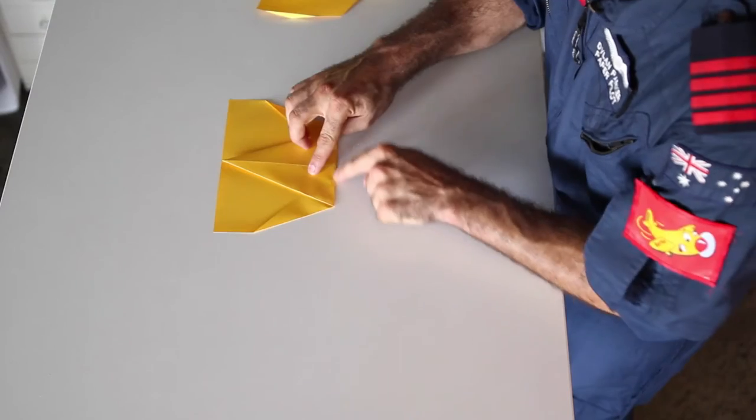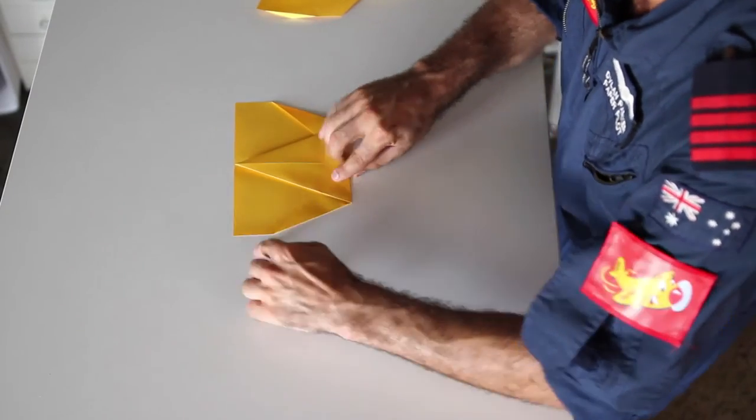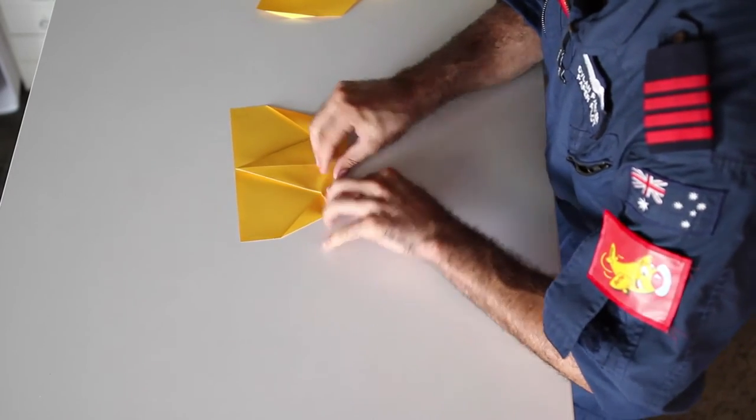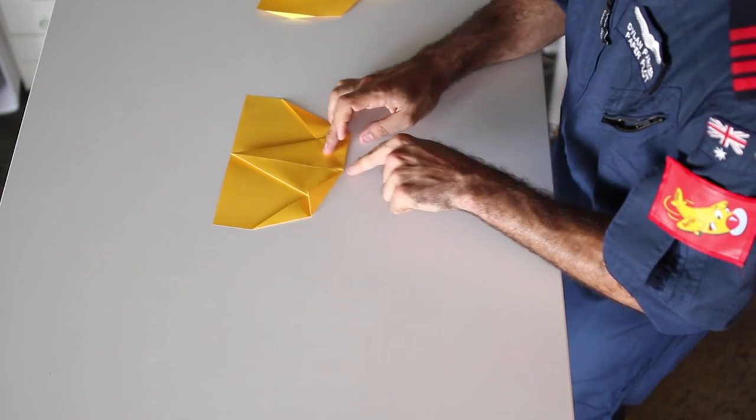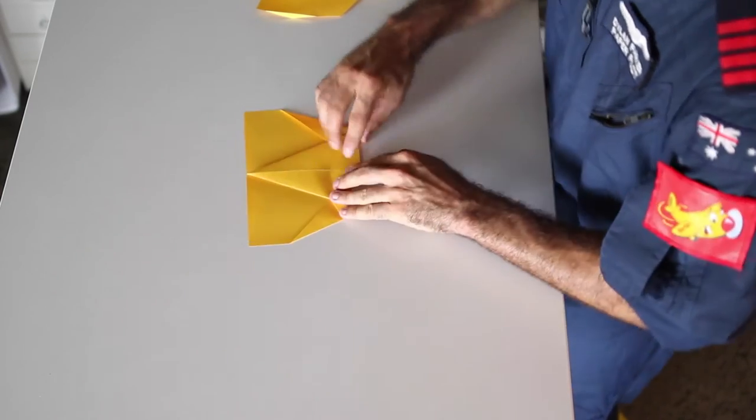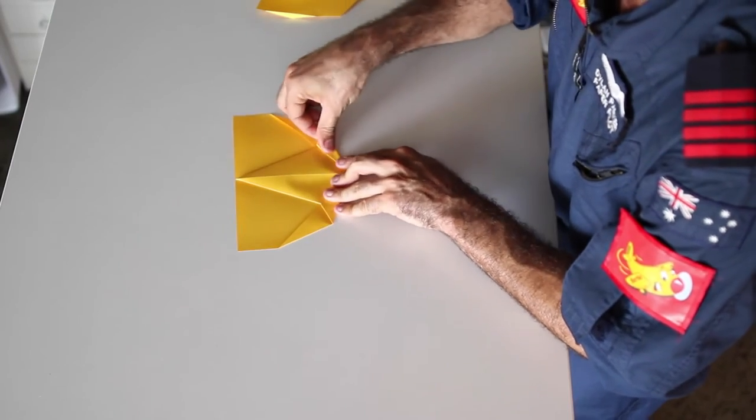I'm going to get the top edge of my plane just there and I want to continue this line to the middle of the plane there by folding that upwards. Now make sure you see that fold continues all the way up to the side of the wing there. Do the same on the other side and then we get ready to do the most dramatic fold of this plane.